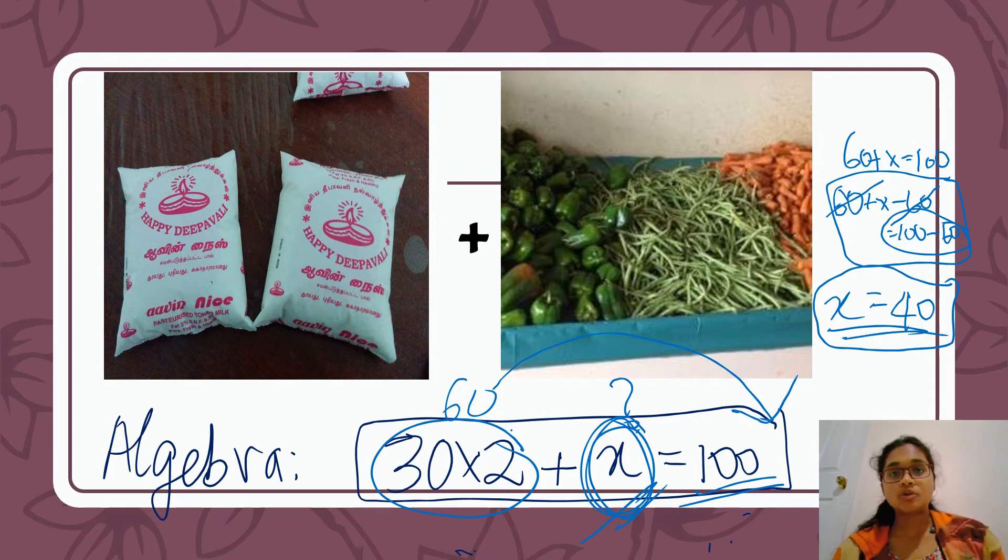That is the 2 packets of flour is 30. If we get 100, we can get the answer. That is why we get 100.